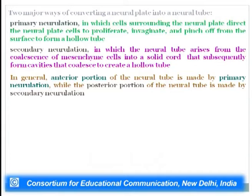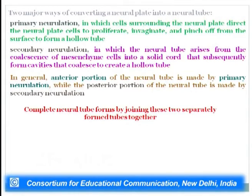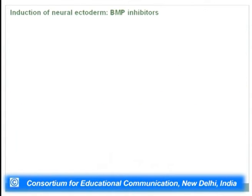In primary neurulation, cells surrounding the neural plate direct neural plate cells to proliferate, invaginate, and pinch off from the surface to form a hollow tube. In secondary neurulation, the neural tube arises from the coalescence of mesenchyme cells into a solid cord that subsequently forms cavities that coalesce to create a hollow tube. In general, the anterior portion of the neural tube is made by primary neurulation while the posterior portion is made by secondary neurulation. The complete neural tube forms by joining these two separately formed tubes.